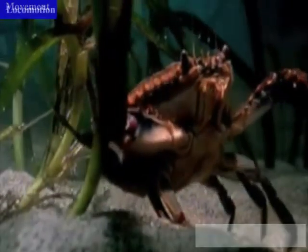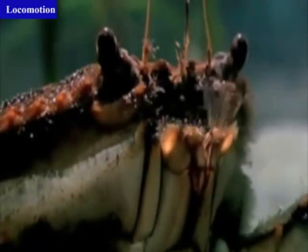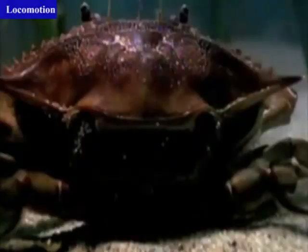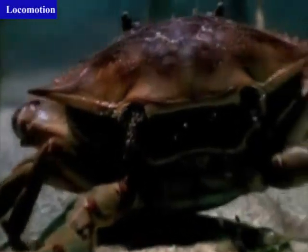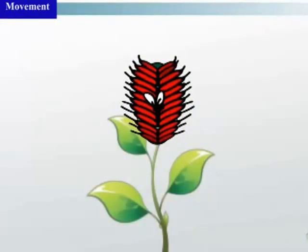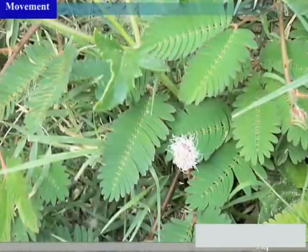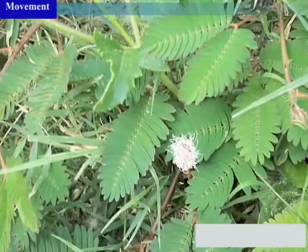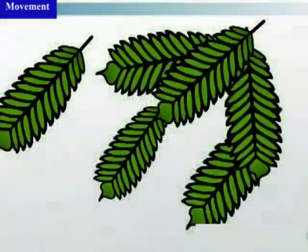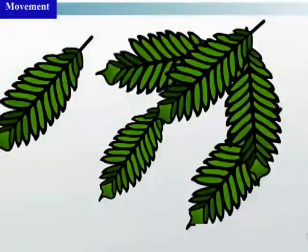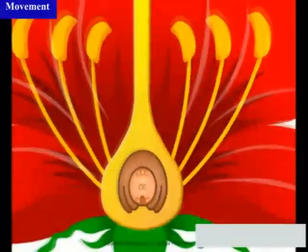Movement of the whole organism is termed locomotion. Movement is a characteristic behavior of all organisms and takes place in response to changes in both external and internal environment. In plants, movement enables them to adequately adjust to the environment.